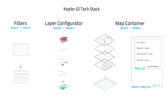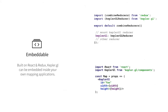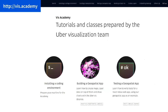Kepler GL is built with React and Redux. It's actually a React component that can be embedded into other applications. We package Kepler GL's state inside a Redux reducer so that it's fairly easy to customize its behavior. You can just import Kepler GL into your React app and import the Kepler GL reducer into your Redux store. If you're interested in how to use it, we also have a website called vis.academy where we list all our open source libraries — Deck GL, Kepler GL — and have step-by-step tutorials that tell you how to build your own app with our open source libraries.